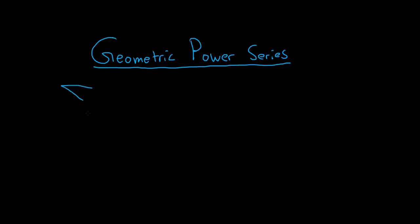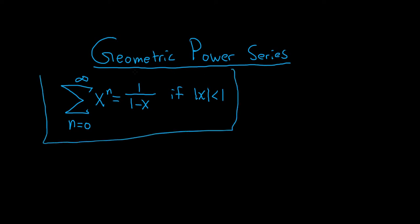So the formula for geometric power series is the following. If we have the infinite sum starting at 0 and going to infinity of x to the n, this is actually equal to 1 over 1 minus x, and this is only true if the absolute value of x is less than 1. So this is the formula that we typically use in geometric power series problems.